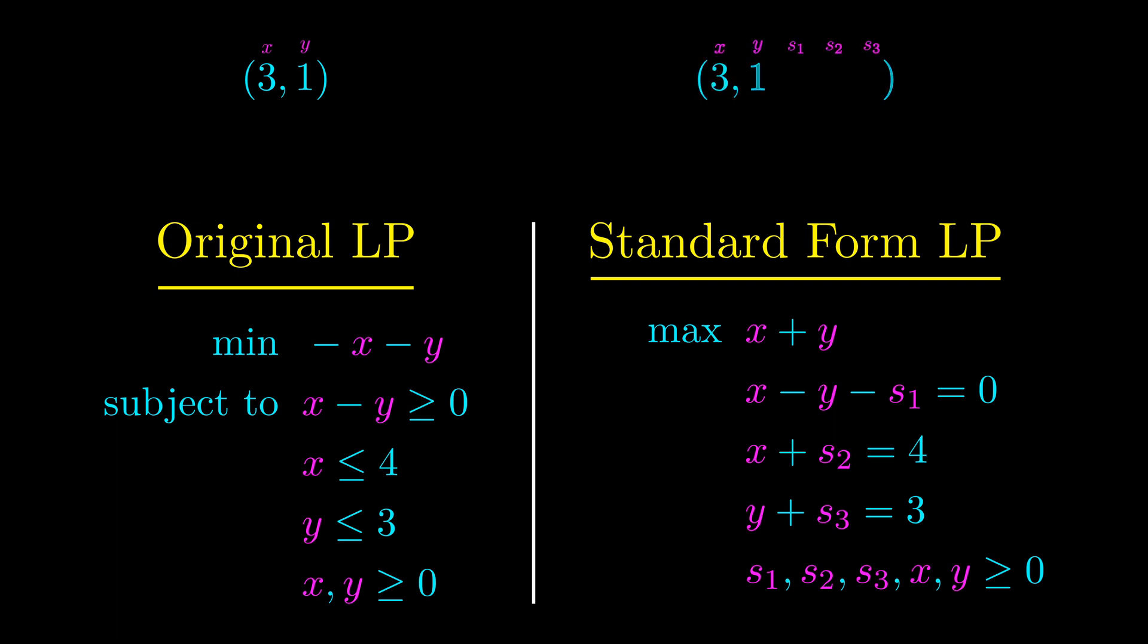For the standard form linear program, x and y are the same. Then, we can find the slacks and surpluses in the constraints, and get a corresponding feasible point for the standard form linear program.